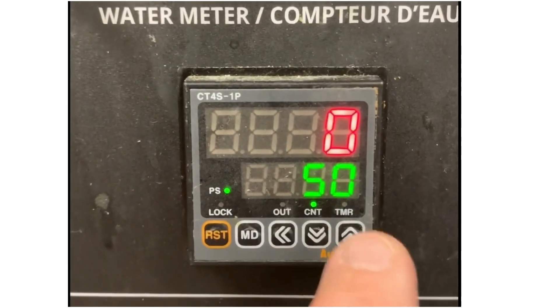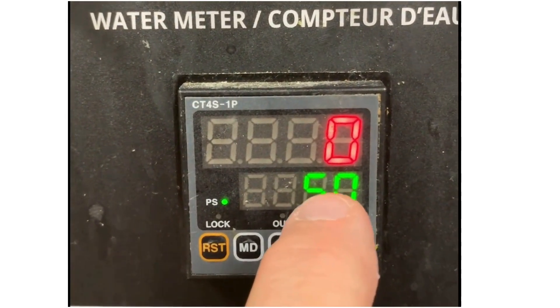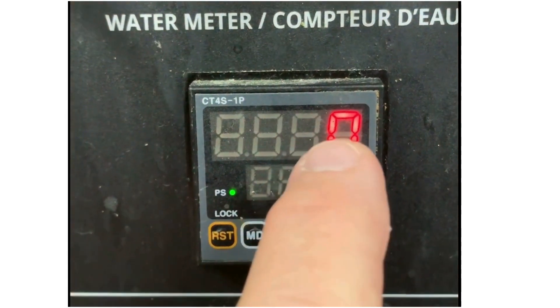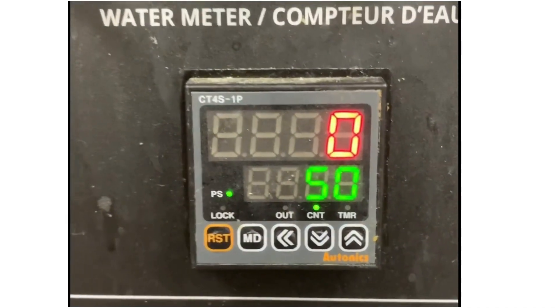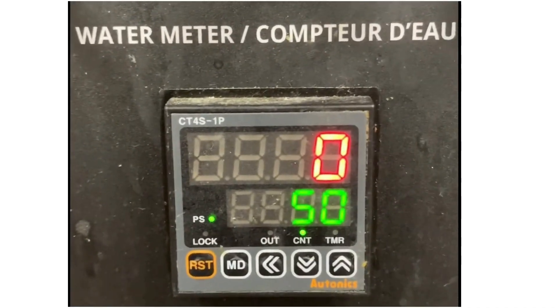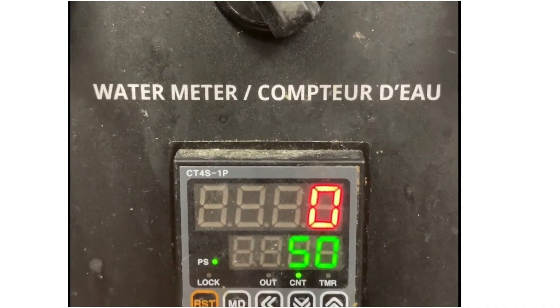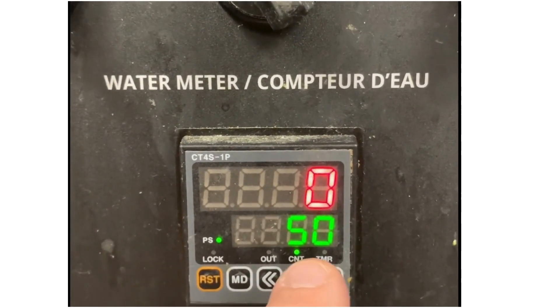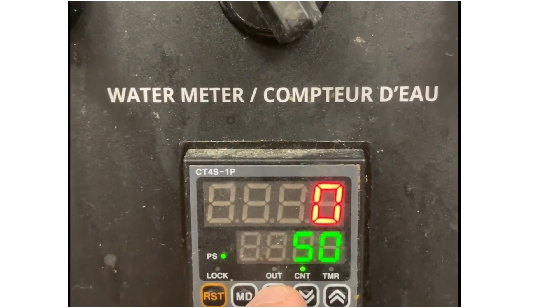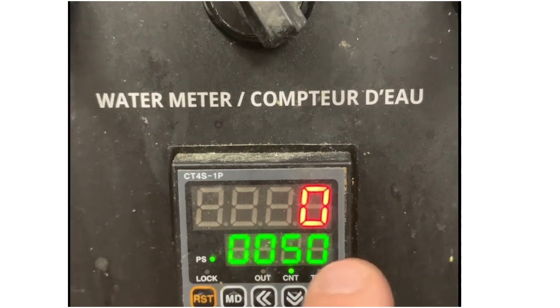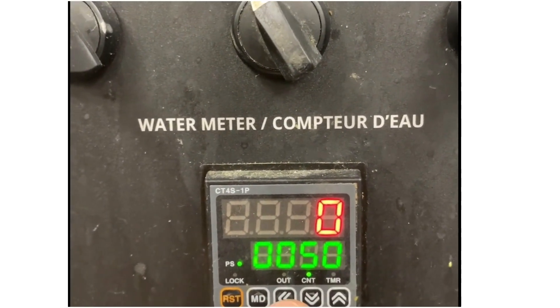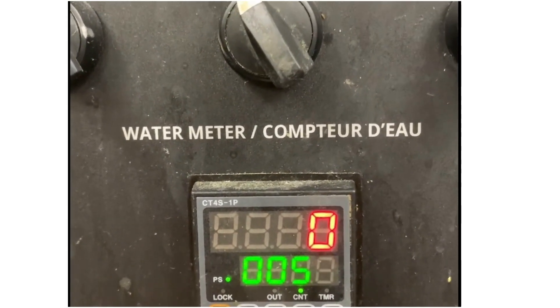On your controls, the green number is your set gallon amount and the red number is the actual amount during a fill. To set the number of gallons, use the arrow keys. You can use the arrow keys to change that digit.